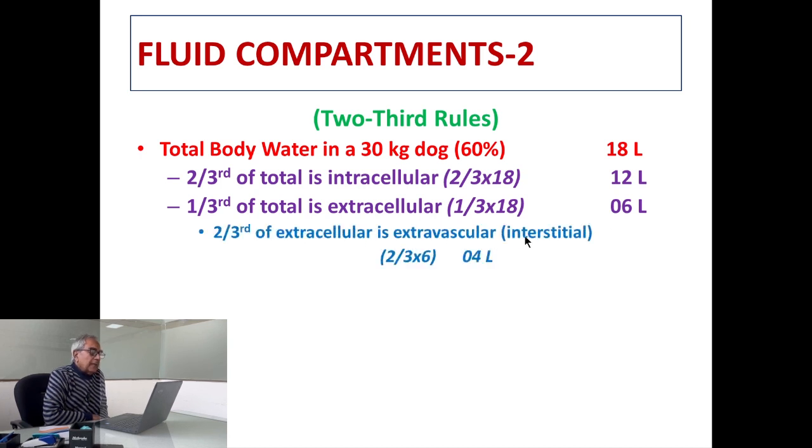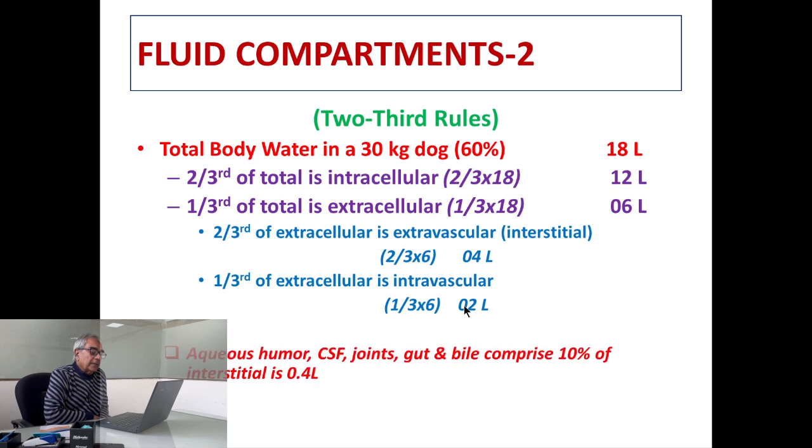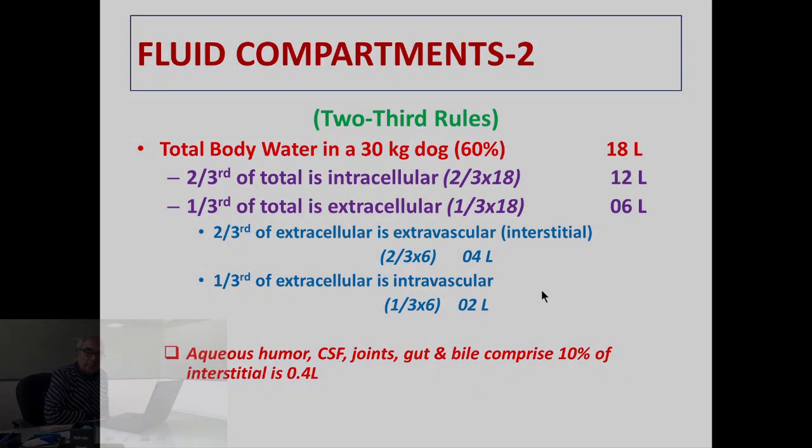Similarly, two-third of the extracellular fluid is extravascular, that is interstitial, that will be 4 liters, and one-third of extracellular is intravascular, that comes to 2 liters. So the results are the same with any formula, you will have the same calculations as far as ICF and ECF are concerned.